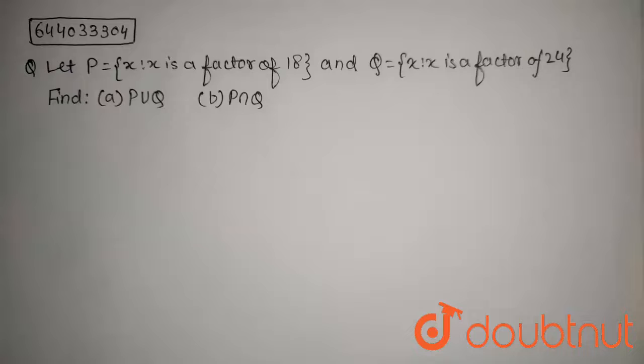The question is: let P is equal to set X such that X is a factor of 18 and Q is equal to X such that X is a factor of 24. Find P union Q and P intersection Q.